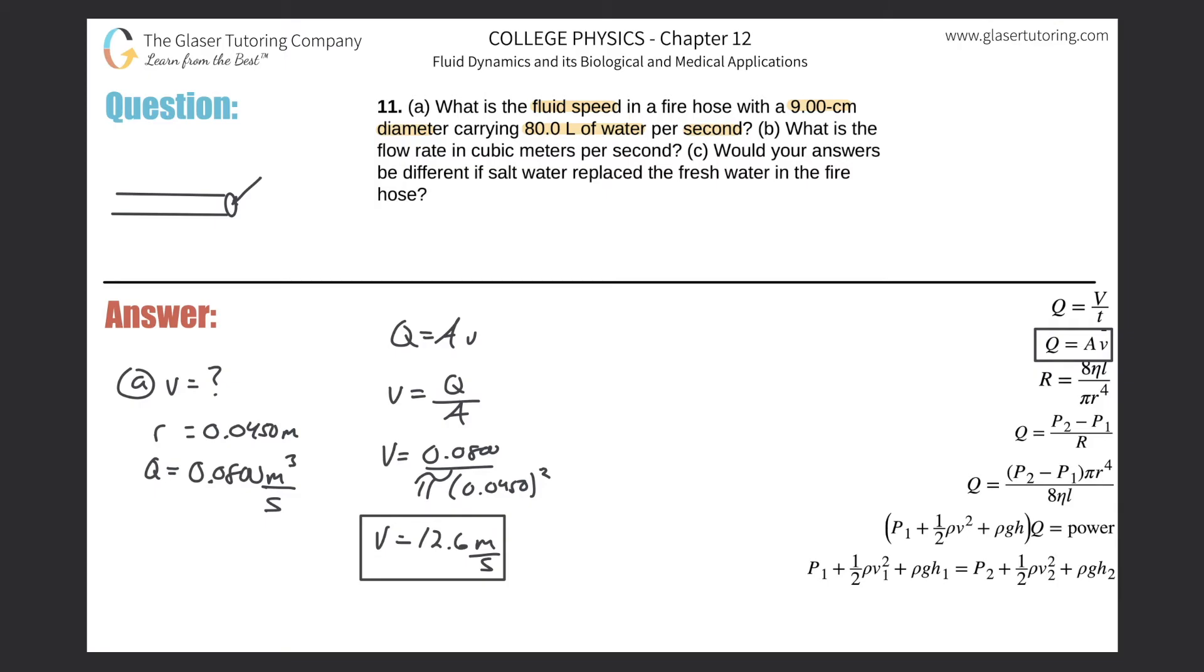Now let's take a look at letter B. It says, what is the flow rate in cubic meters per second? See, isn't that great? We did it already. Here's the answer for letter B. All right. So B is this answer. Yeah, I love questions like this.